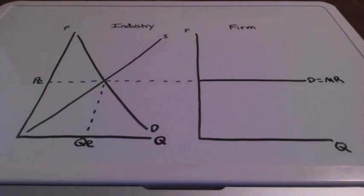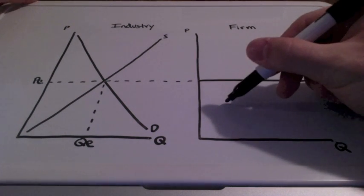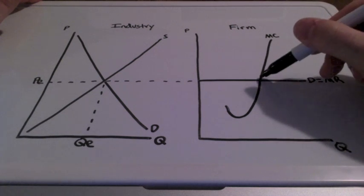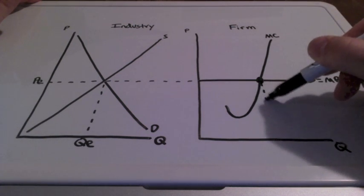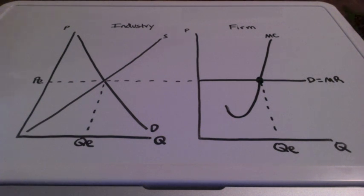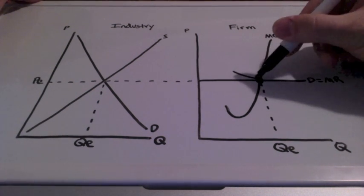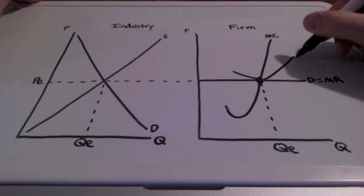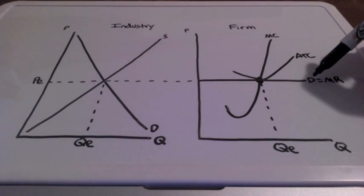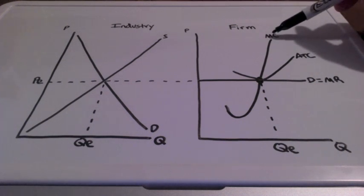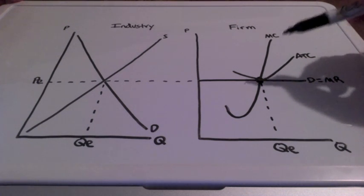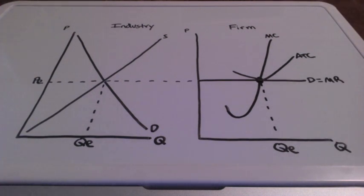That price is also the revenue brought into the firm. The firm will produce where marginal revenue equals marginal cost — we refer to this as the profit maximizing quantity. All firms in perfect competition start off in long run equilibrium, where price equals demand, which equals marginal revenue, which equals marginal cost, which also equals minimum average total cost. All graphs start and end in long run equilibrium.